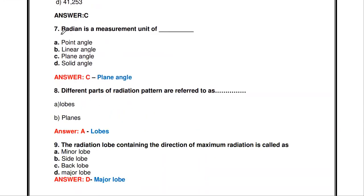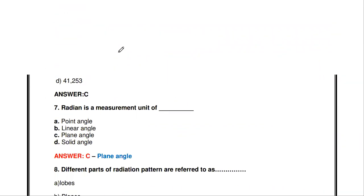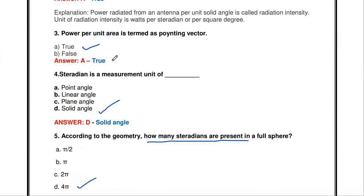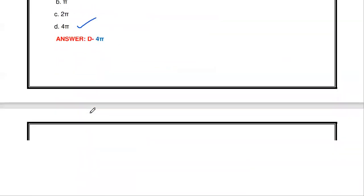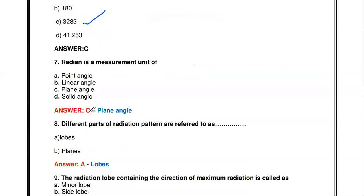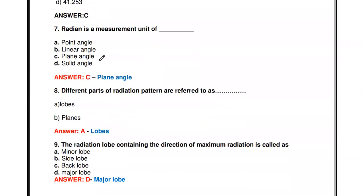Radian is a measurement of what? Previously we established that steradian is a measurement of solid angle. Similarly, the radian is a measurement of plane angle.